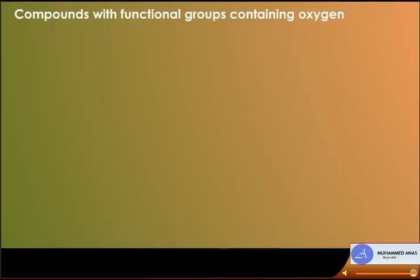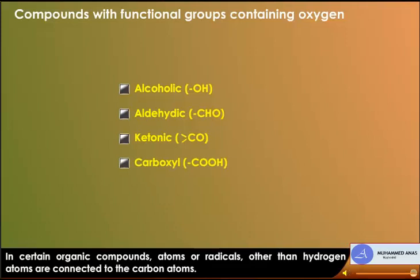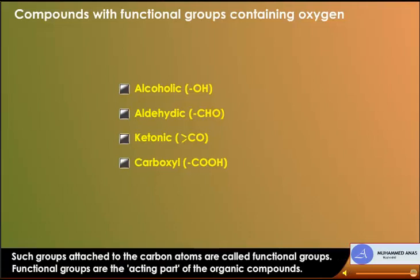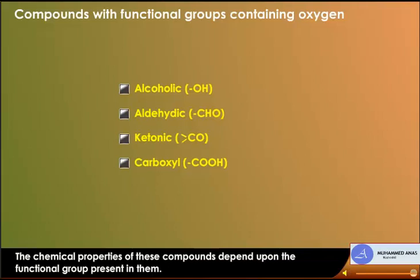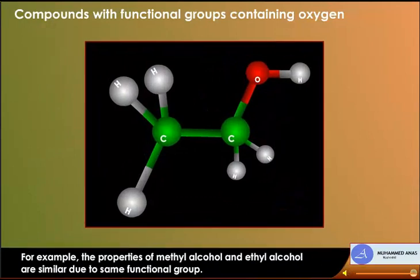Compounds with functional groups containing oxygen include alcoholic (-OH), aldehydic (-CHO), ketonic (C=O), and carboxyl (-COOH) groups. Atoms or radicals other than hydrogen connected to carbon atoms are called functional groups. Functional groups are the acting part of organic compounds, and the chemical properties of compounds depend on their functional group. For example, methyl alcohol and ethyl alcohol have similar properties due to the same functional group.